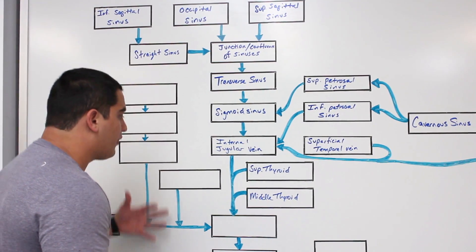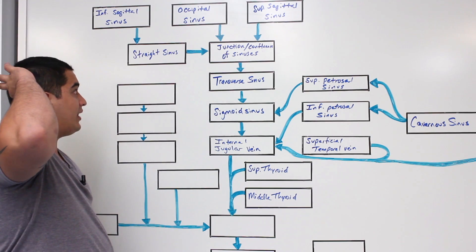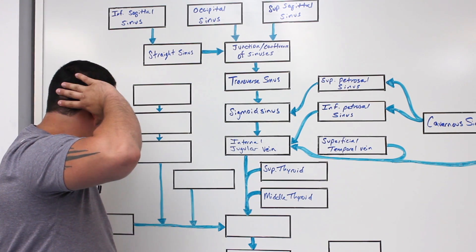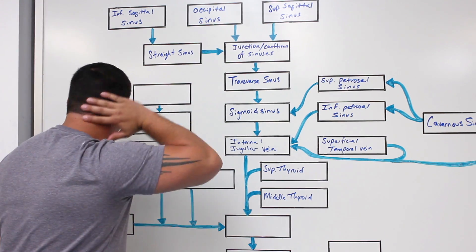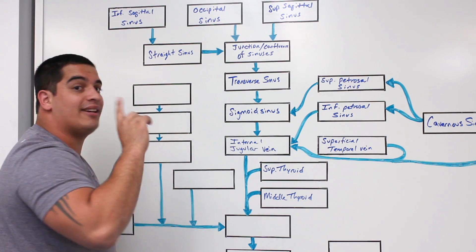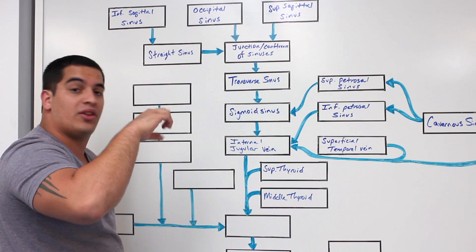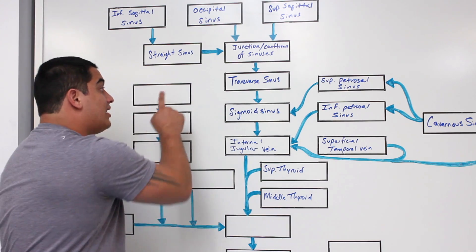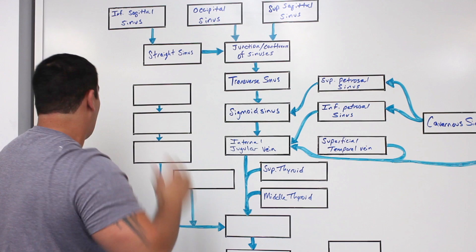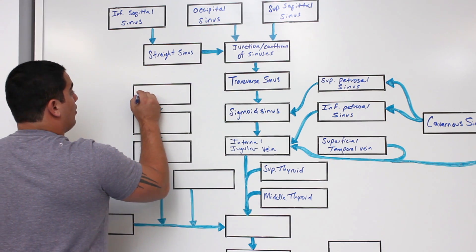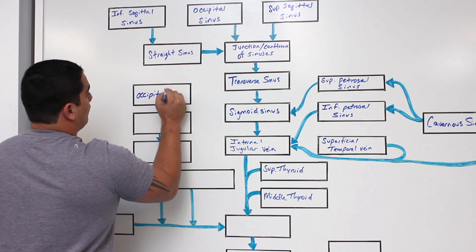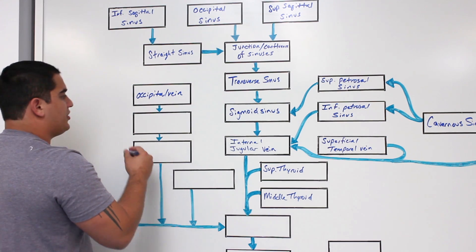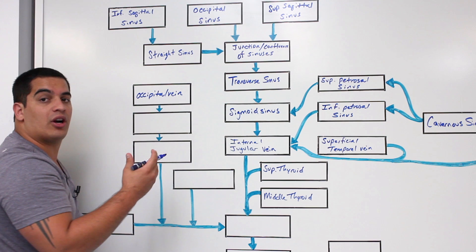Now, there's another vein — don't confuse it with the occipital sinus — located on the back of the head called the occipital vein, which drains structures on the outer surface of the skull. The occipital sinus is a dural sinus found inside the skull between the meningeal and periosteal layers. The occipital vein moves downward, picks up branches, and eventually becomes the posterior auricular vein, running around the ear.